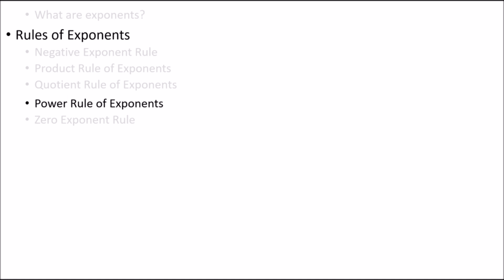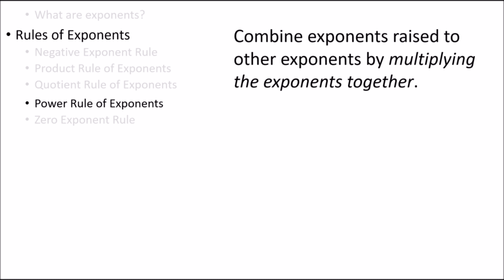The next rule of exponents is called the power rule of exponents. It gives us a way to simplify exponents that are raised to other exponents. The power rule tells us that we can combine exponents raised to other exponents by multiplying the exponents together. For example, here we have 2 to the 3, the quantity raised to the power of 5. We can apply the power rule of exponents here, multiplying the 3 and 5 exponents together to give us 2 to the 15.